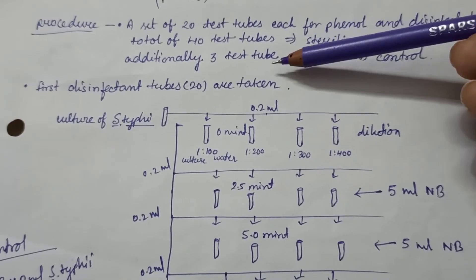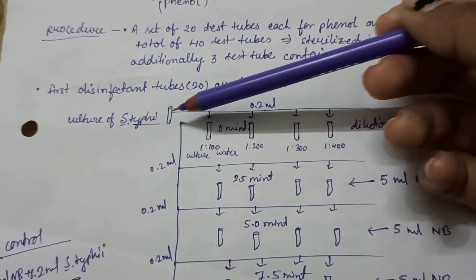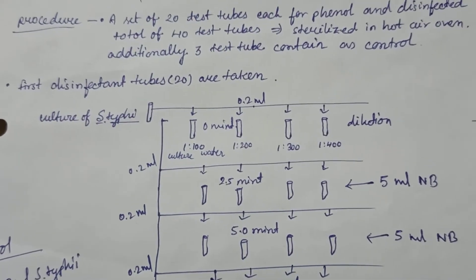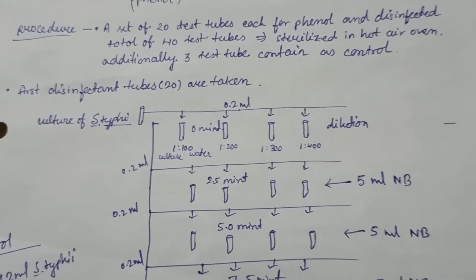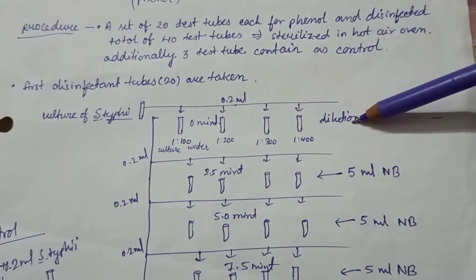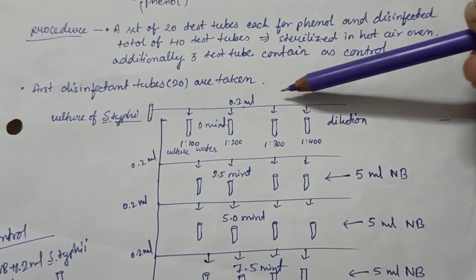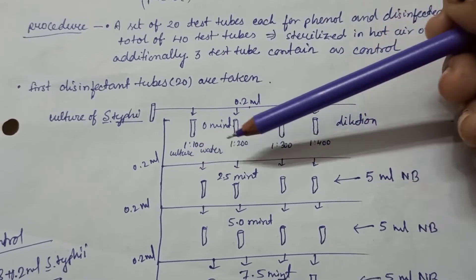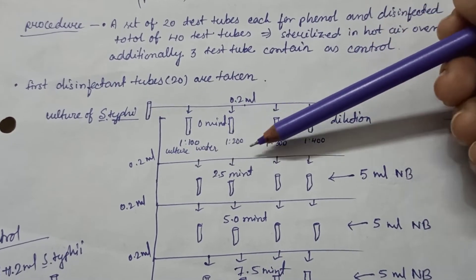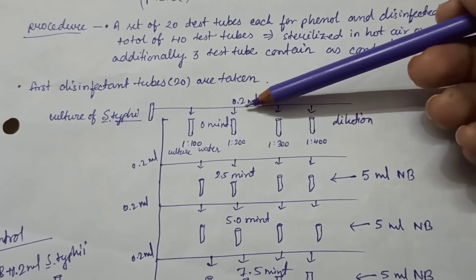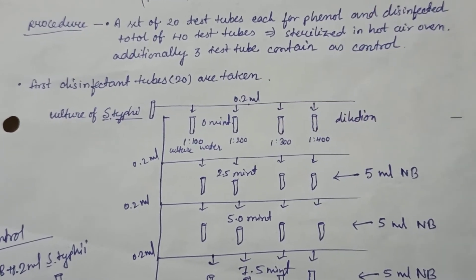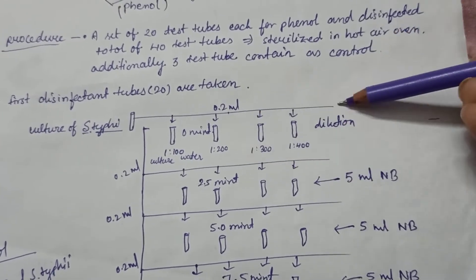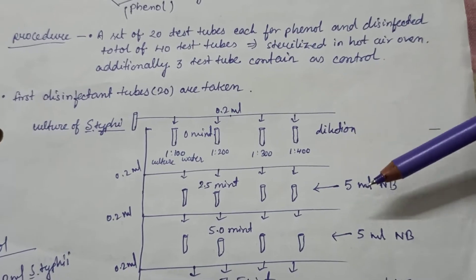Additionally, three test tubes contain as a control are prepared. First, the disinfectant tubes are taken and the culture of Salmonella typhi is taken. From the culture we will inoculate all this test tubes and we will make a dilution, that is 1:200 ratio—one is the part of culture and 200 parts water. 0.2 ml of this culture is inoculated and this is marked as 0 minute.